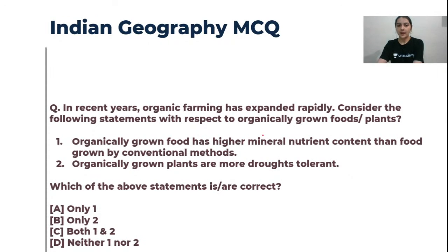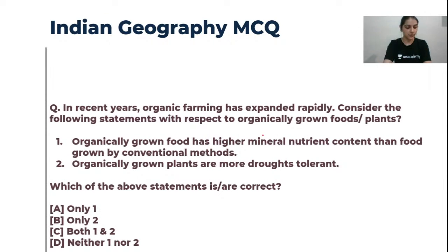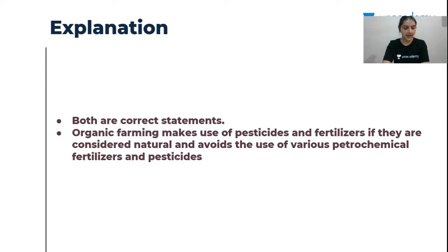Third geography question: Consider statements with respect to organically grown farm foods. The correct answer is C — both statements are correct. Organic farming has expanded rapidly compared to conventional methods, and organically grown plants are more drought tolerant. Millets are a good example of organic foods grown in drought-tolerant areas.